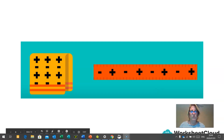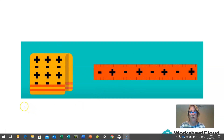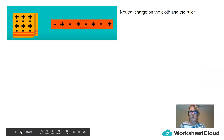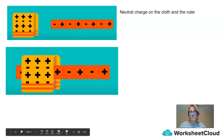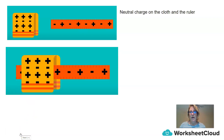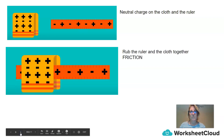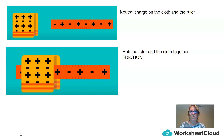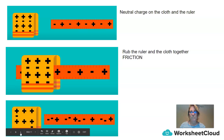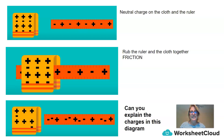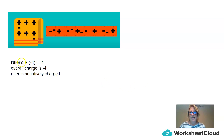So here we have a little experiment. We have fabric and a plastic ruler. They both carry a neutral charge. If we take the fabric and rub it across the plastic ruler, we term that process as being friction. So once we have done that, I would like you to look at this diagram and see if you are able to explain the charges. Let's have a look and see if you were correct.